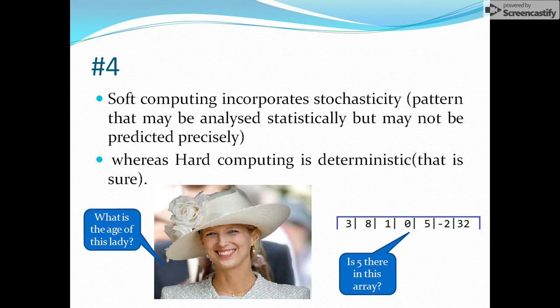The fourth one - soft computing incorporates stochasticity. That is the patterns that may be analyzed statistically but may not be predicted precisely. You can analyze them using some statistics, but you cannot precisely predict what the output will be, what that pattern will be. For example, in this diagram, you can see the diagram of a lady.